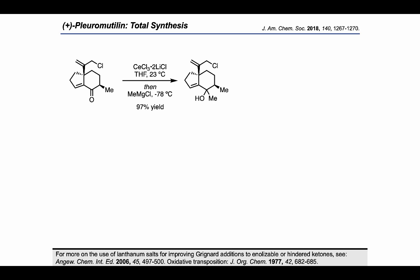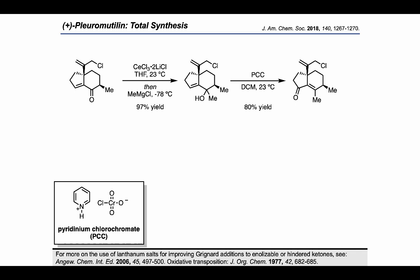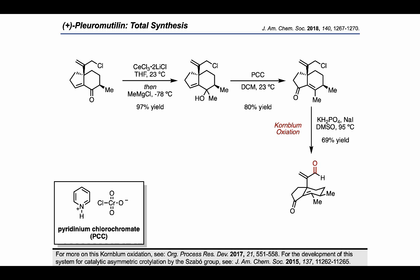The authors employed methylmagnesium chloride in a Grignard addition in the presence of cerium trichloride, from a procedure developed by the Imamoto group for ketone electrophiles that are enolizable or hindered. Subsequent treatment with PCC resulted in an oxidative transposition to provide an enone product. The allylic chloride could then be converted into an enal by employing the Kornblum oxidation using monopotassium phosphate and sodium iodide in DMSO with heat.